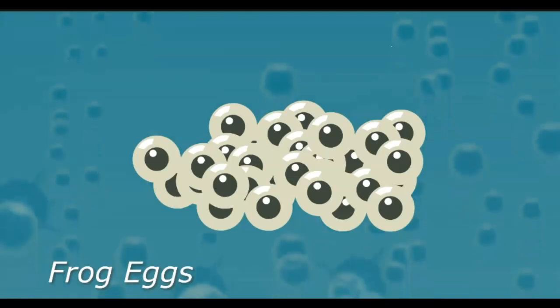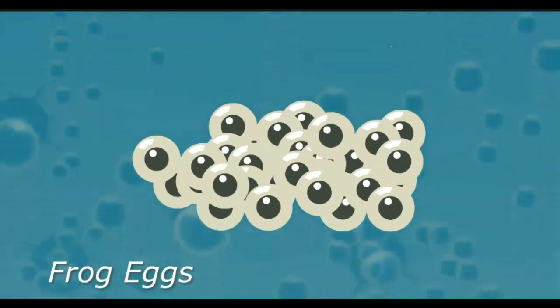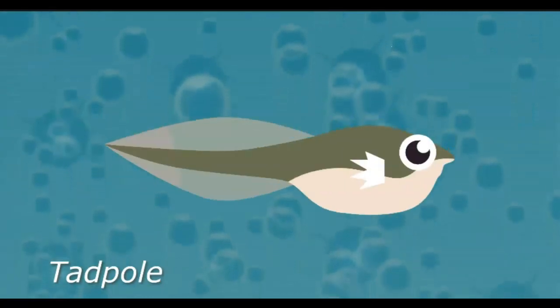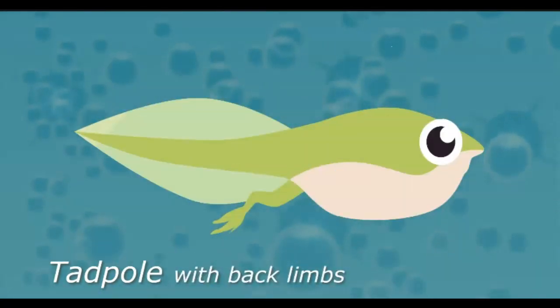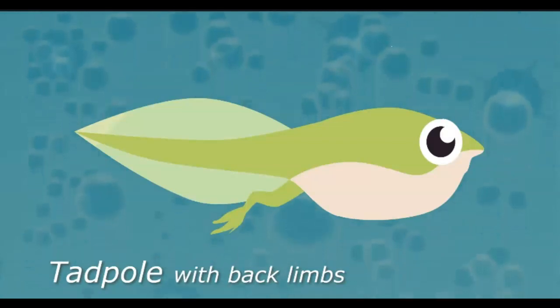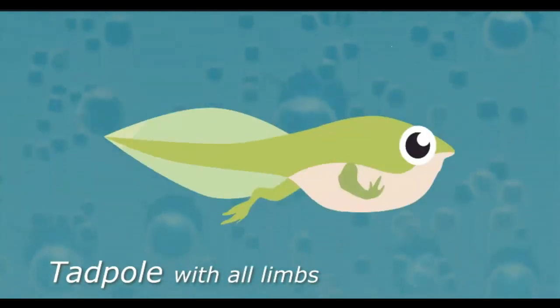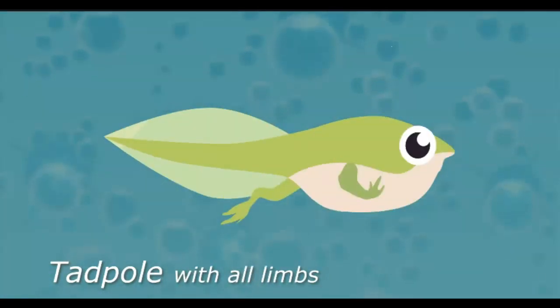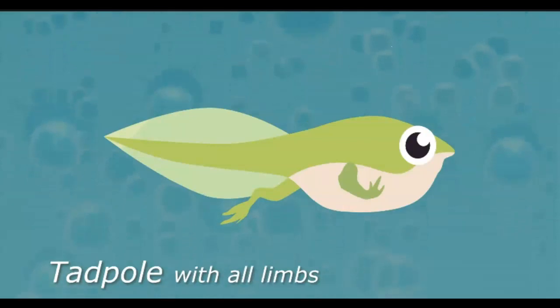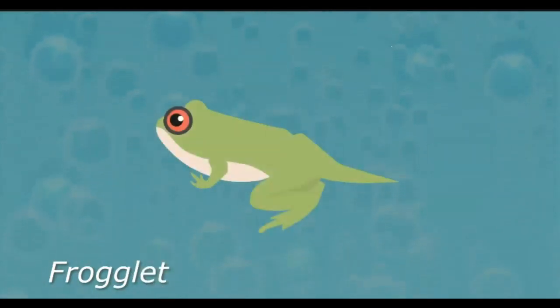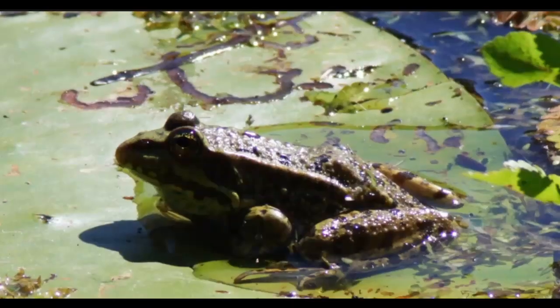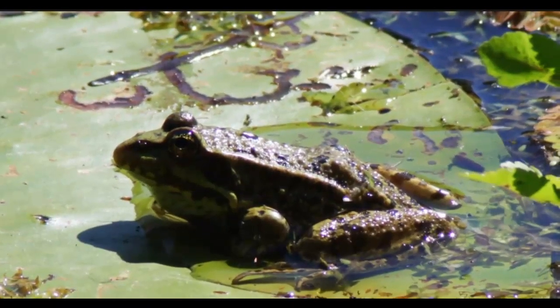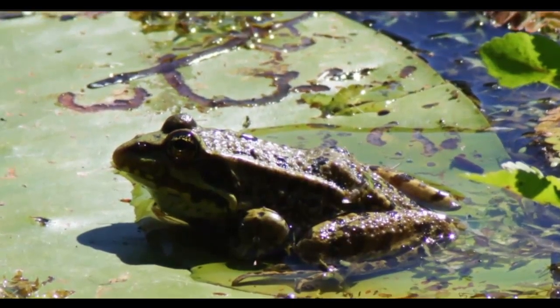Frogs start their lives as eggs that are hatched from an adult frog. Tadpoles then hatch from those eggs. Those little tadpoles eventually grow two front legs, and two more legs gradually appear in the back. The tadpoles then turn into a froglet, which looks just like an adult frog only with a tail. Finally, the froglet loses its tail and becomes an adult frog.